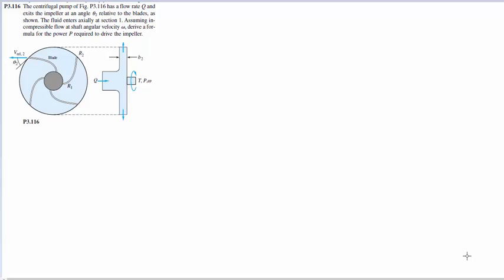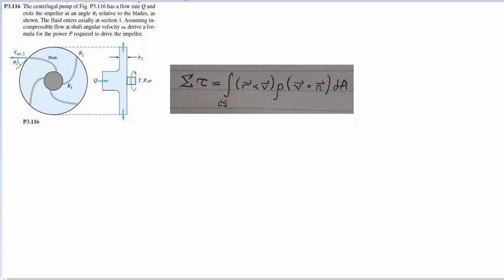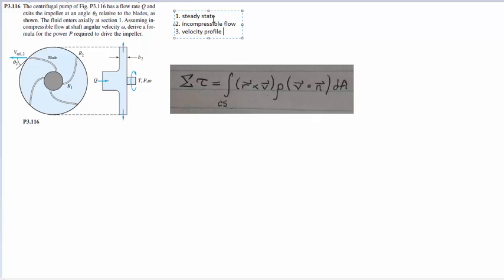What makes this problem somewhat difficult is really understanding the geometry of what's happening. Our Reynolds transport theorem for angular momentum is going to look similar to how it has in the past. The simplifying assumptions were steady state, which got rid of the control volume term; incompressible flow, which lets rho be constant; and velocity profile is constant, which means it doesn't depend on the geometry of the cross section. That lets us pull everything out of the integral except for dA. The hard part is this cross product and this dot product.